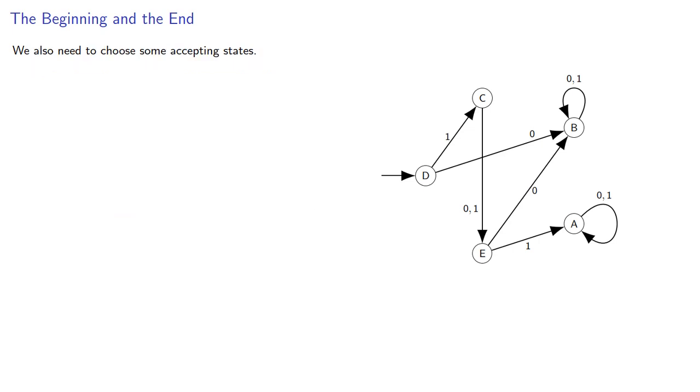We also need to choose some accepting states. And again, we can choose as many states as we want to be accepting states. This time we'll choose B and C, and we can represent these are accepting states by using double circles. And so this gives us a state diagram for a finite automaton.